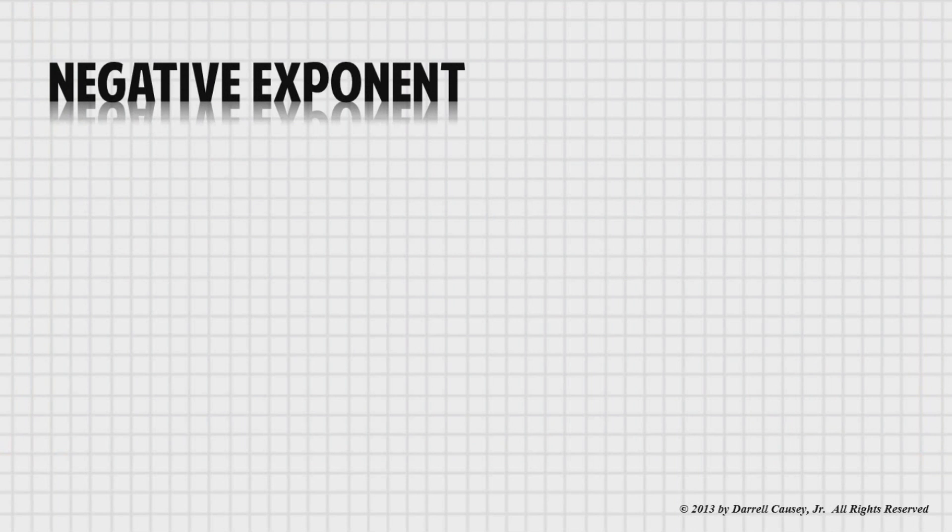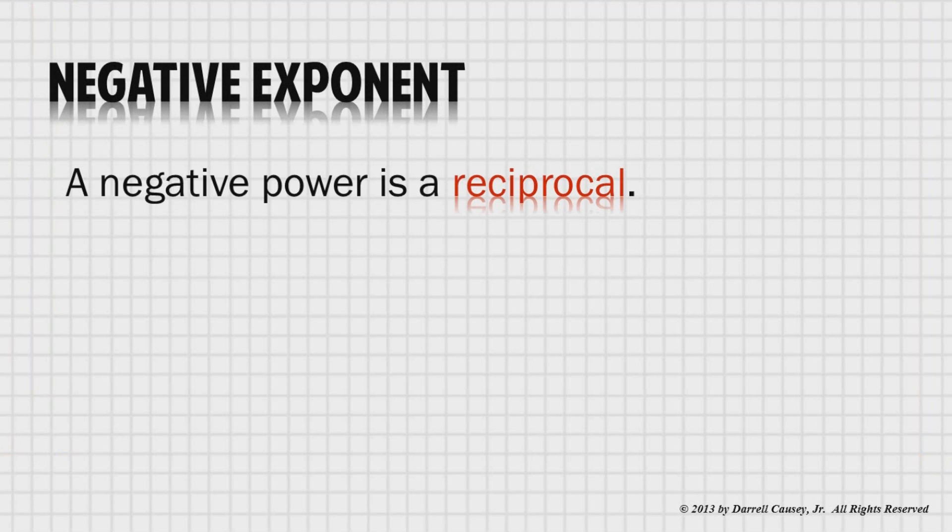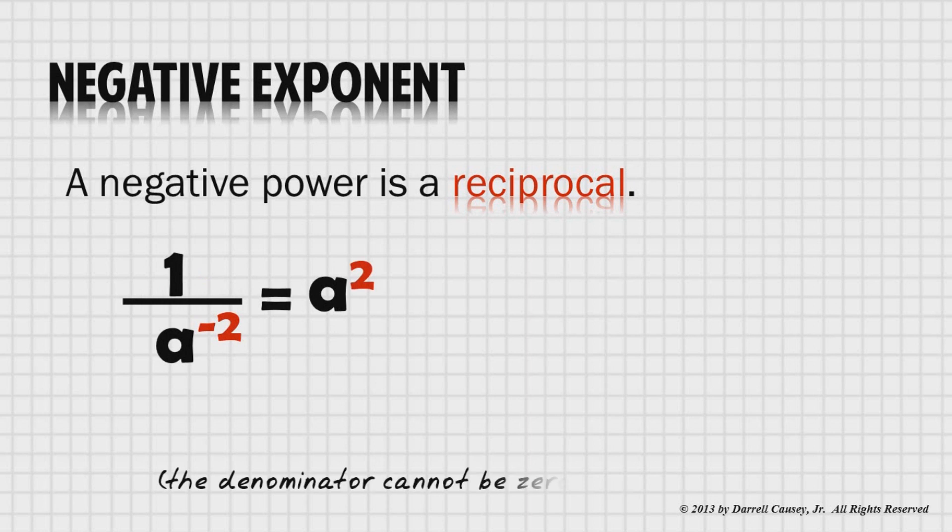Negative exponents, very important. You pay attention to this rule. A negative power is a reciprocal. A to the negative two is the same thing as 1 over a squared. Notice also the negative sign is not there anymore. It's the negative exponent that means that this is a fraction, a reciprocal. And 1 over a to the negative two, well that's also a reciprocal. Therefore, it equals a squared. And let's remember, denominators cannot be zero. Can't divide by zero people.